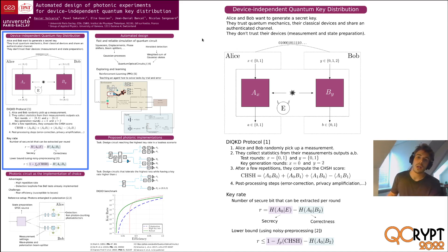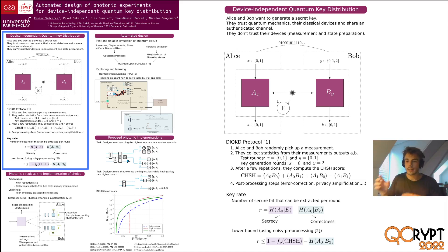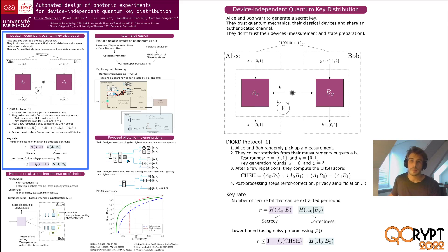Device-independent quantum key distribution is a way that two parties, Alice and Bob, can use to generate a secret key unknown to a third party. To do so, they trust quantum mechanics, their classical devices — so they have a lab with a computer and so on that they can trust — and they also share an authenticated channel of communication. This is a scheme of the DIQKD protocol where you have a source that sends a signal shared between Alice and Bob, and some quantum measurement on Alice and Bob's side. Eve is considered to have access to all of the quantum mechanical parts, so Alice and Bob don't trust this quantum mechanical part — hence the term device-independent.